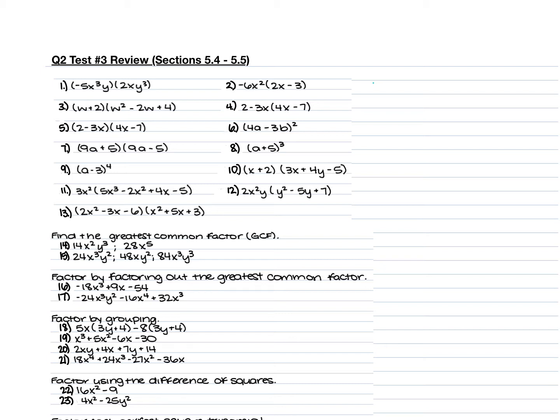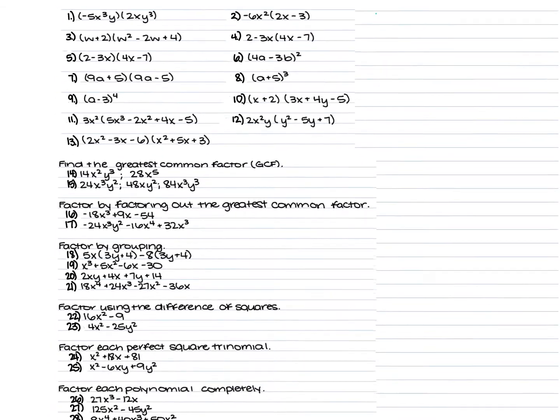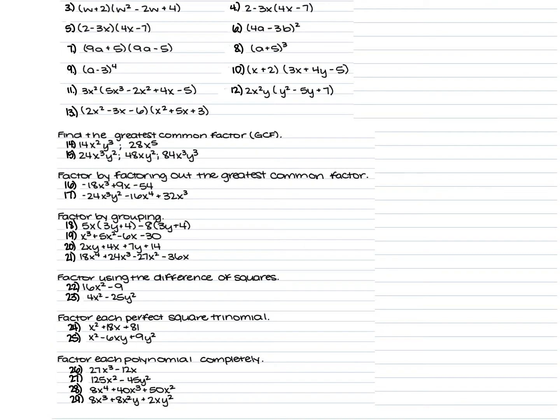We're going to try to go through each of these during class today. The first part of them you're just multiplying. The second part tells you to find the greatest common factor, factor out the greatest common factor, factor by grouping, factor using the difference of squares, factor using the perfect square trinomial method, and then factor each polynomial completely.